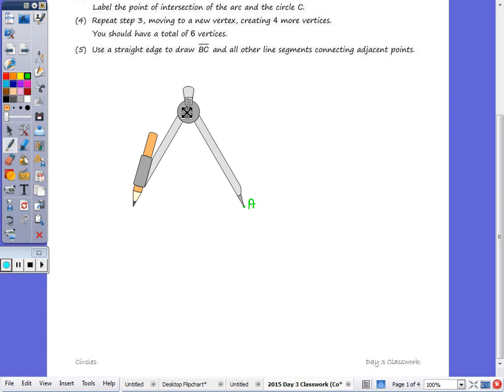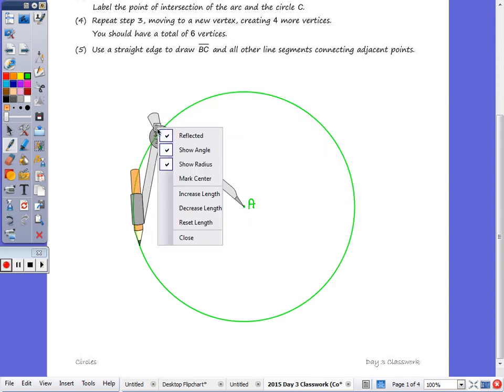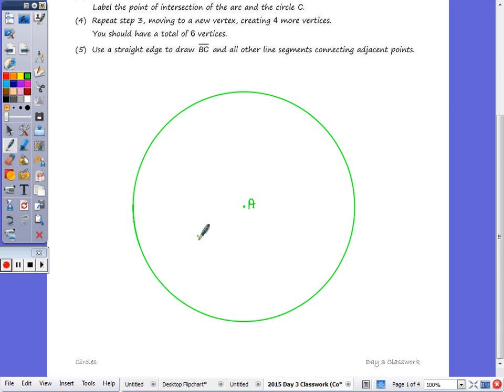Just make sure when you open up the compass, make sure it fits. So put it to the top, bottom, left, and right. Make sure you have a circle that fits before you draw it. So here's circle A. The next thing we need to do is draw point B anywhere on circle A. So here I'll put point B right here.